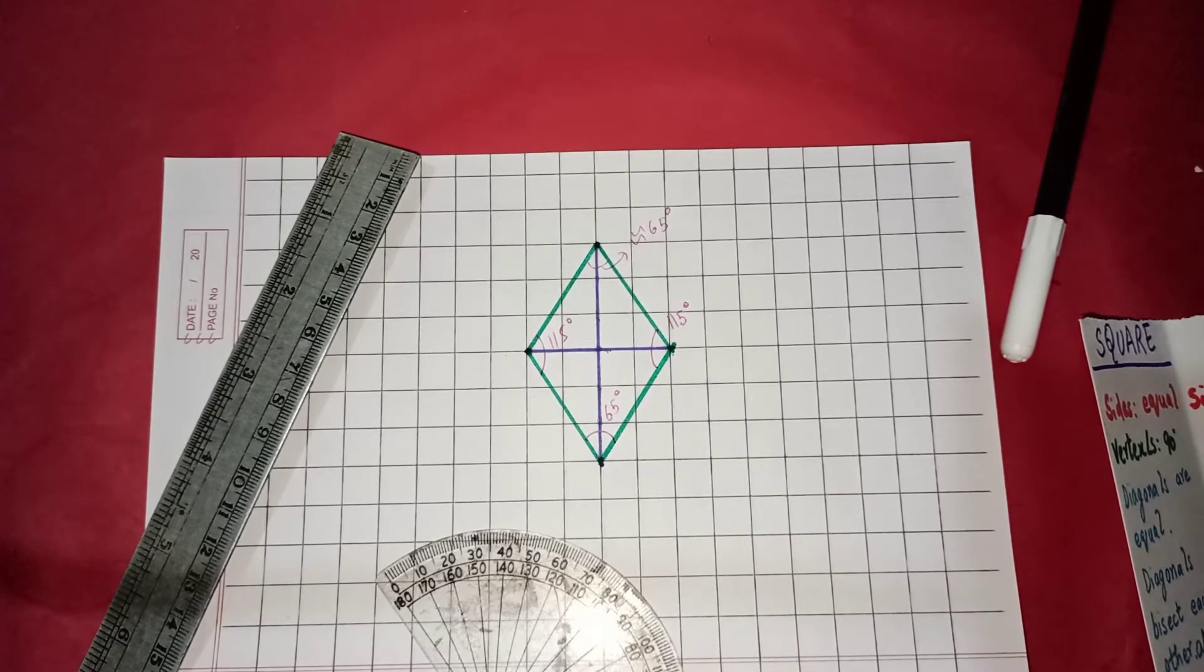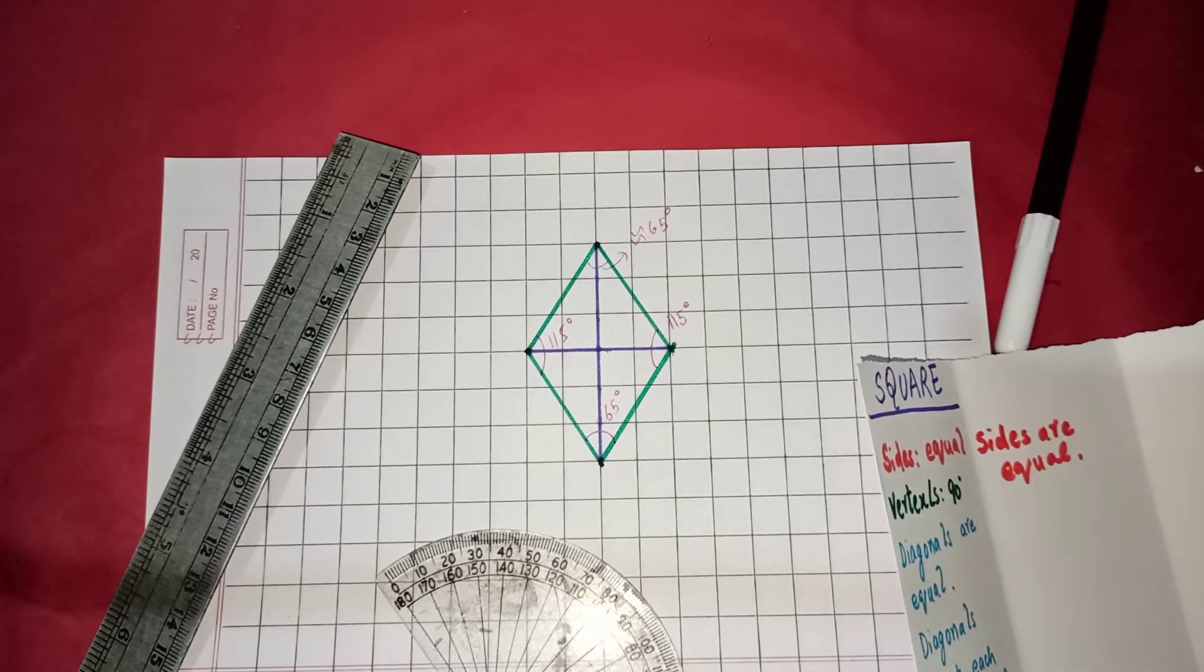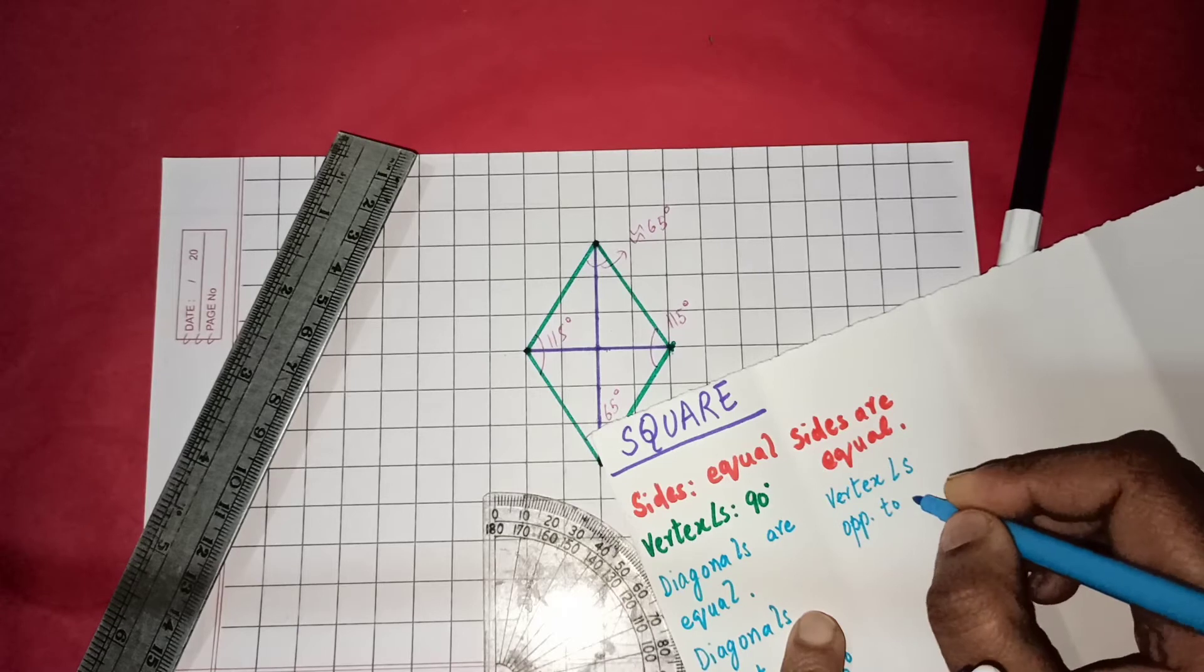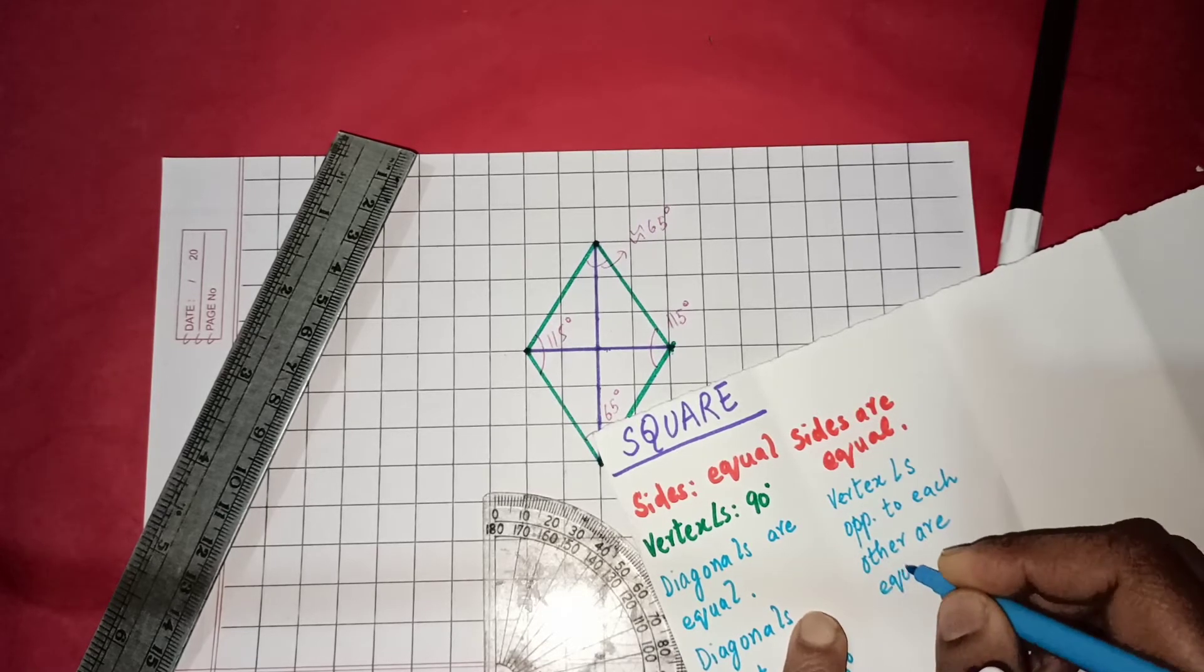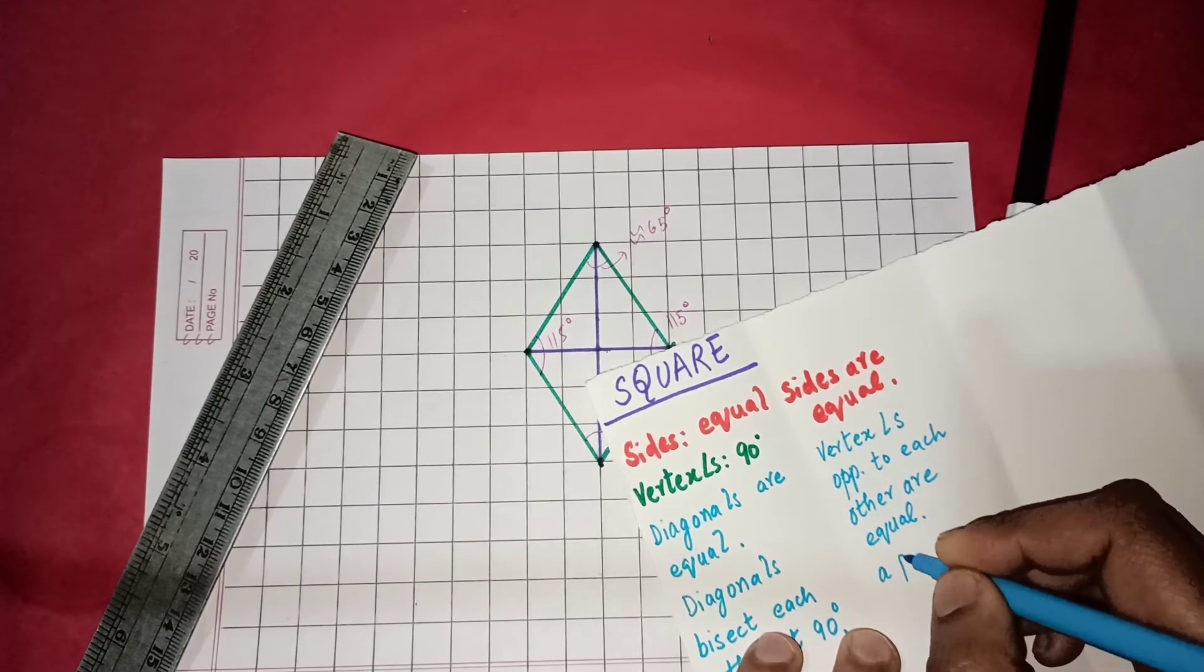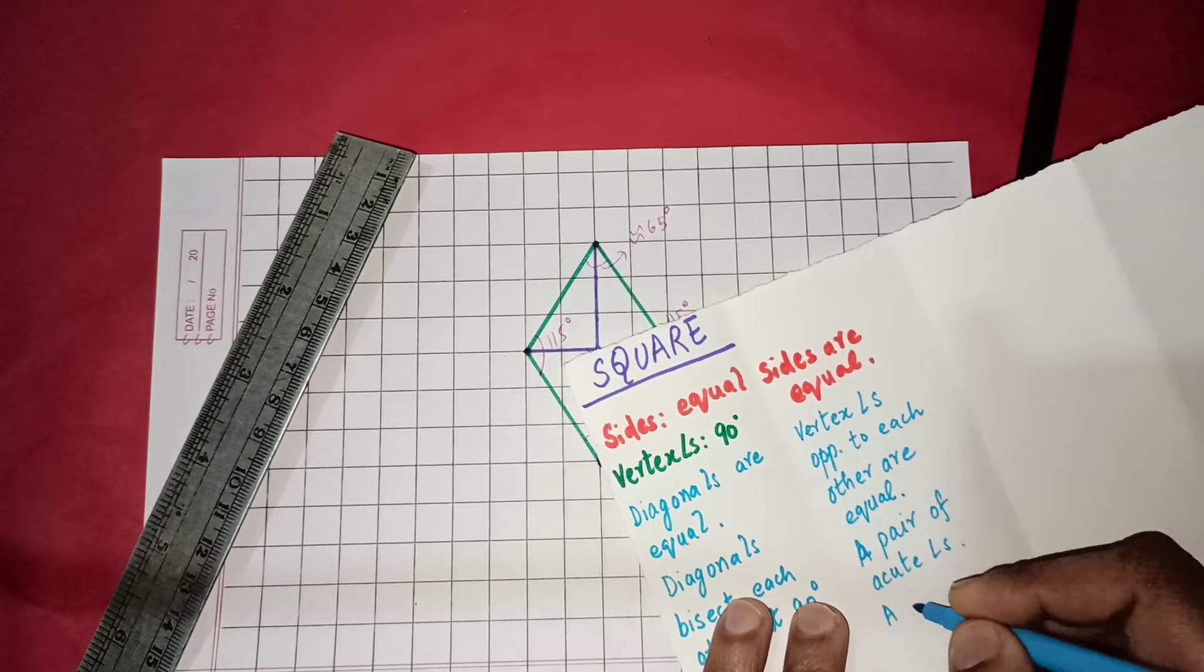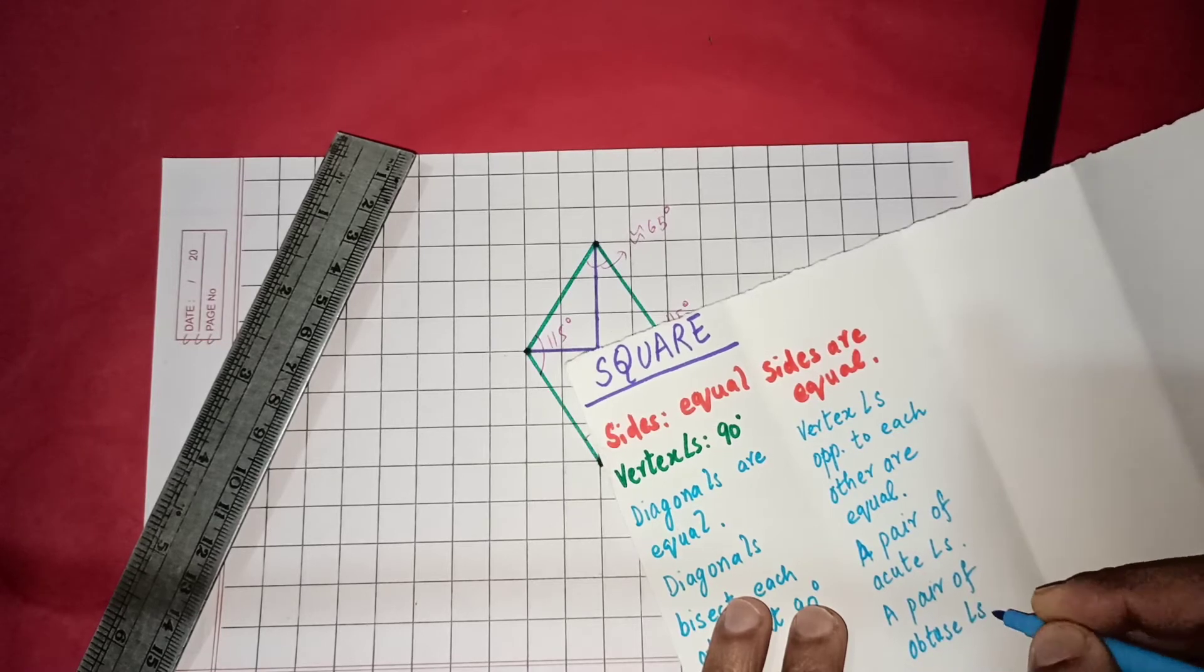We can see something now. We can see that the opposite angles are equal. That means the vertex angles which are opposite to each other, they are equal. So I am going to write vertex angles which are opposite to each other, they are equal. And we also notice that we have a pair of acute angles, that is less than 90 degrees, and a pair of obtuse angles, that is greater than 90 degrees.